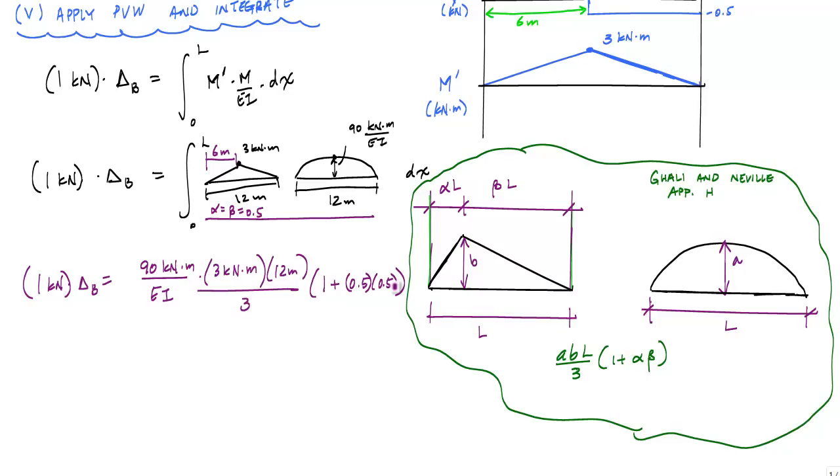this will tell me, obviously these units will cancel out with one of the kilonewtons there, but I'll get delta B is equal to positive 1,350 over EI kilonewton meter cubed.